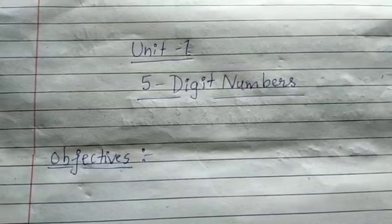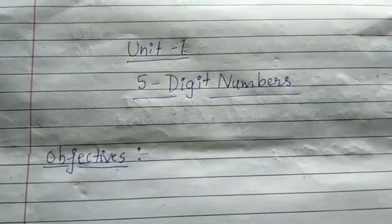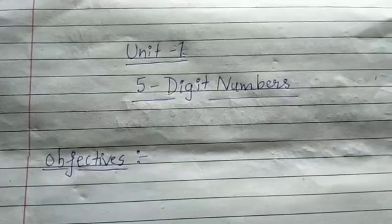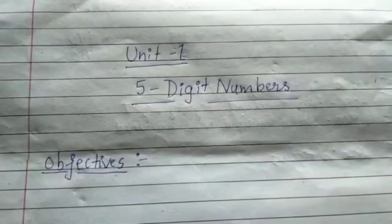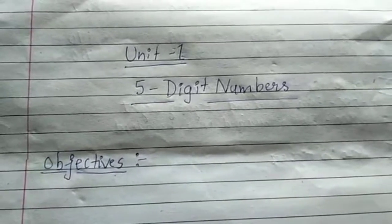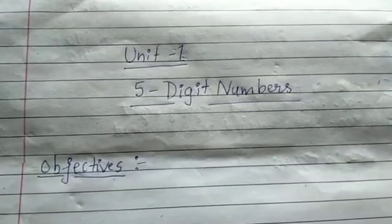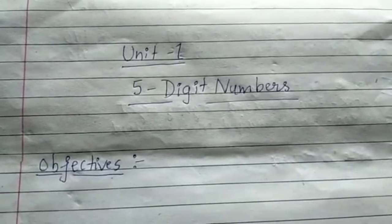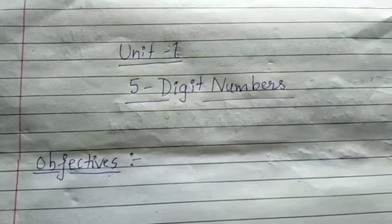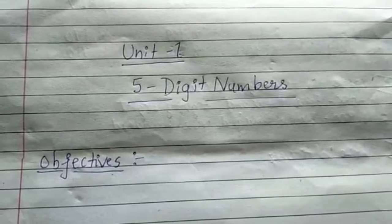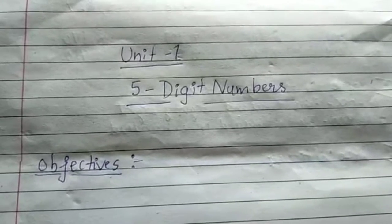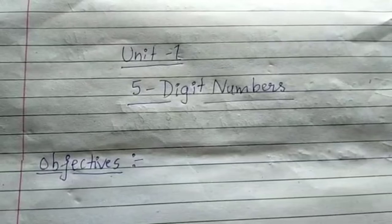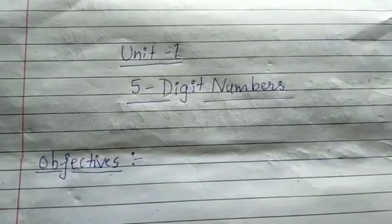After studying this unit, you can read and write 5-digit numbers, recognize the place value of digits in 5-digit numbers, expand the 5-digit numbers according to the place value of digits and write the numbers in standard form. You can also arrange the 5-digit numbers in ascending and descending order and write the skipped numbers for the given 5-digit numbers.